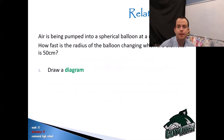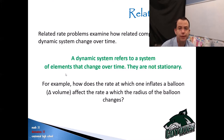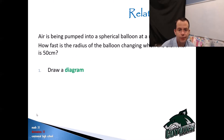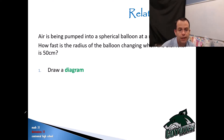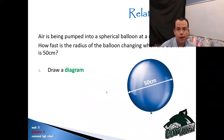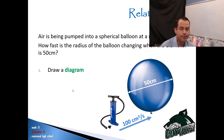First question: air is being pumped into a spherical balloon at a rate of 100 centimeters cubed per second. As soon as you see 'how fast,' think to yourself — that's a rate, and if you want a rate, you need a derivative. How fast is the radius of the balloon changing when the diameter is 50 centimeters? The first thing we do is draw a diagram: a spherical balloon with diameter 50 centimeters, and air being pumped in at 100 cm³ per second.